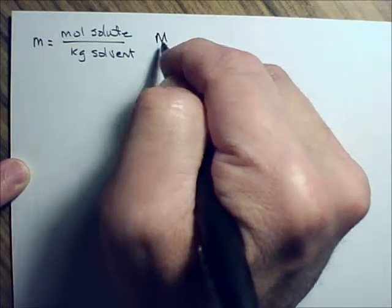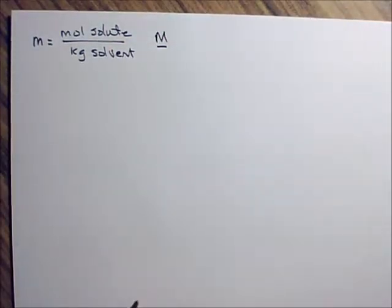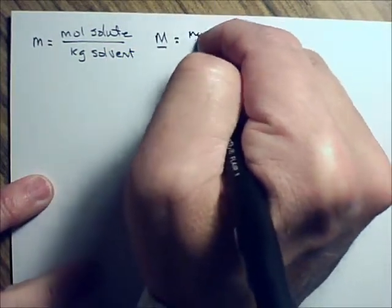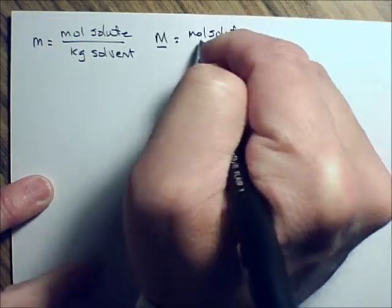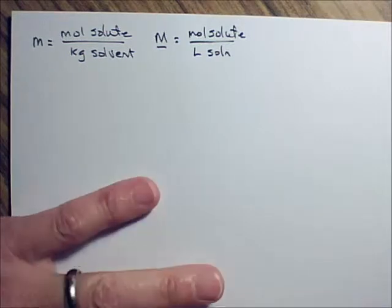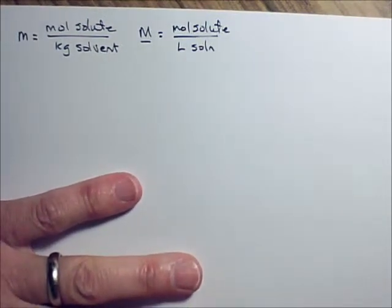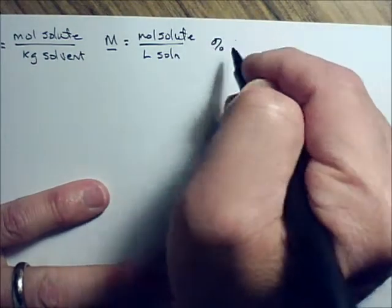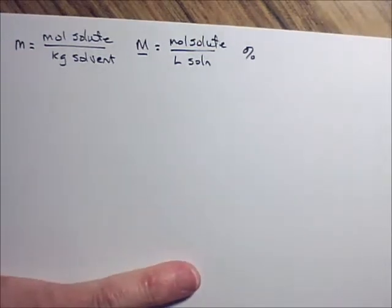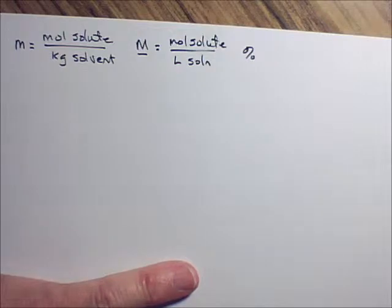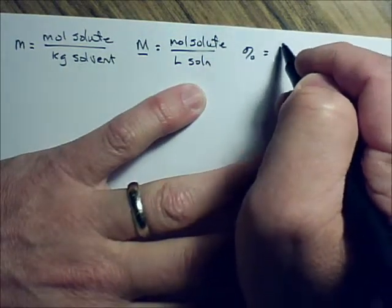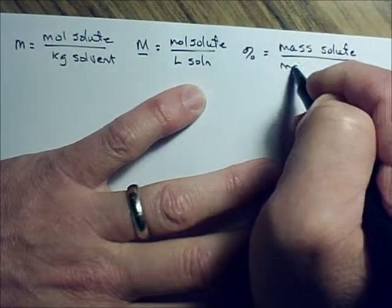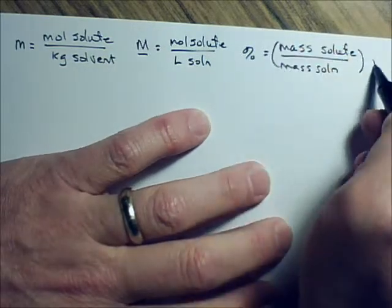Then there's molarity, which we symbolize as a capital M, and any time we're writing it by hand we always put a line under it. Molarity is always moles of solute over liters of solution. And then we had percent, or percent concentration. Percent is always — unless you're told otherwise — assumed to be mass of solute over mass of solution, multiplied by 100.